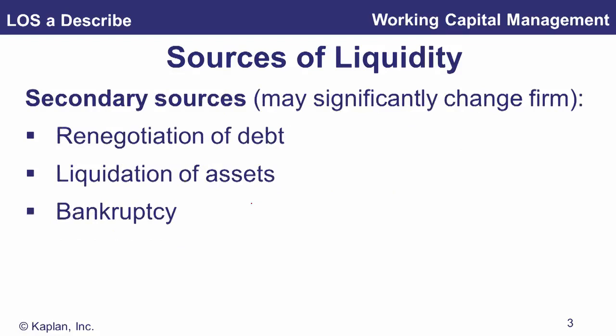Secondary sources of cash, as the slide says, may significantly change the firm. If we're generating cash from secondary sources, we're probably in trouble — restructuring or renegotiating debt, liquidating assets, or in the worst case, in bankruptcy and liquidating assets to get cash from there.